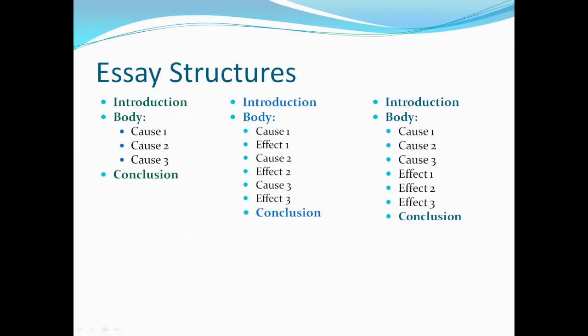Let's take a look at three possible essay structures. The first essay structure focuses on causes — this can also be used to write a paper that focuses only on effects. The second structure combines both causes and effects in the body of the paper by alternating discussions of causes first, followed directly by a discussion of the effects. Be careful with this structure and make sure that every cause and every effect is balanced. The last structure also combines causes and effects; however, it details all of the causes first, then discusses all of the effects without alternating back and forth. Use your topic to help you choose the most effective organizational structure.